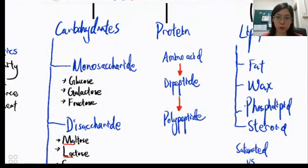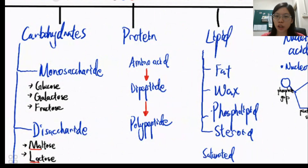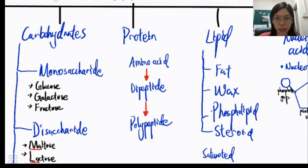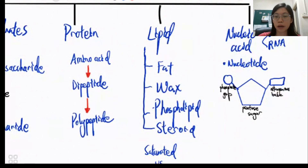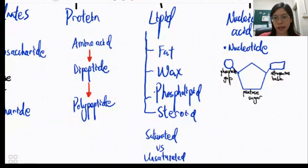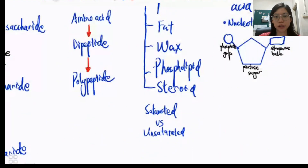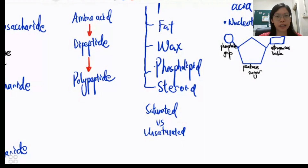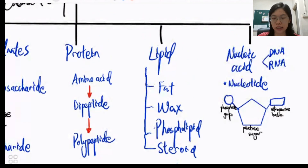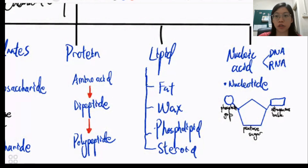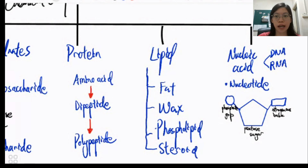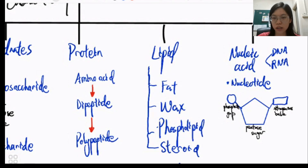We also learn about protein, whereby amino acids join together to form a long chain of amino acids called a polypeptide. We also learn about lipids — fat, wax, phospholipid, and steroid — and the differences between saturated fat and unsaturated fat. Last but not least is nucleic acid, which can be RNA or DNA. The monomer of nucleic acid is called nucleotide, which has a phosphate group, a pentose sugar, and a nitrogenous base.